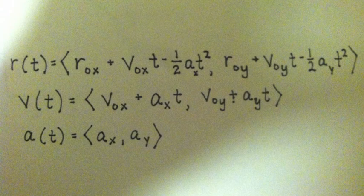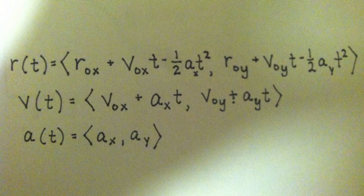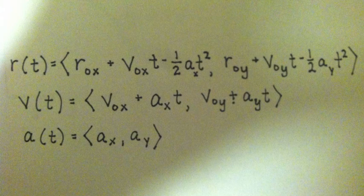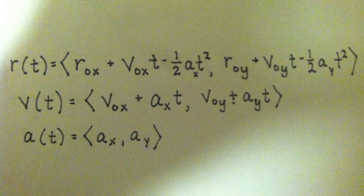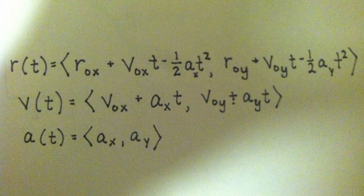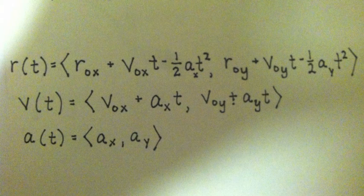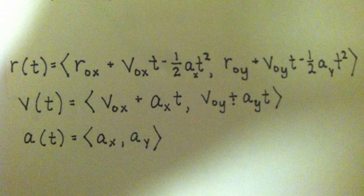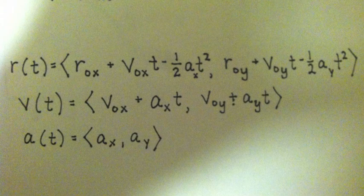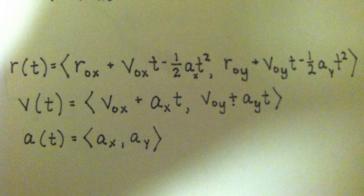And these general equations that we have can be used to further our understanding of motion and how r, v, and a relate to one another. So r(t) can be given as r_0x + v_0x*t - (1/2)a_x*t^2 as the x component, and r_0y + v_0y*t - (1/2)a_y*t^2 as the y component. And this indicates that r_0 and v_0 both represent the original starting position or velocity of the particle.